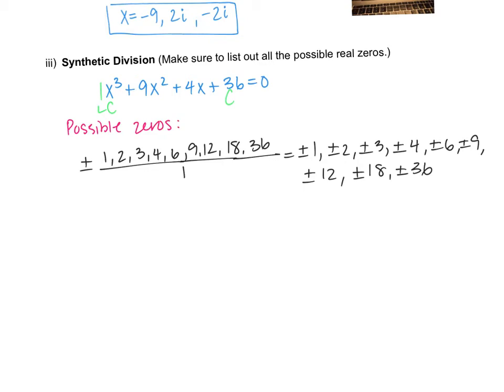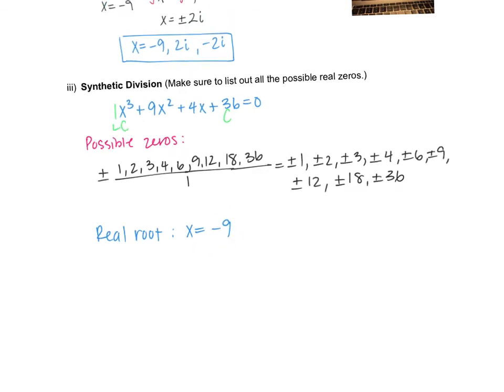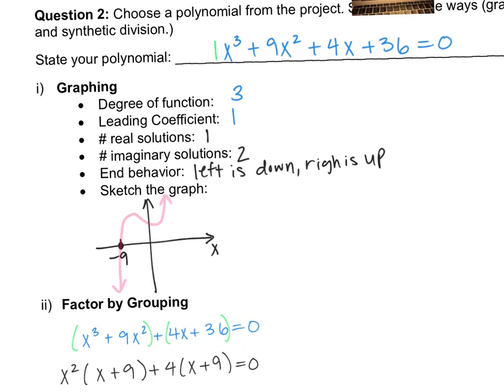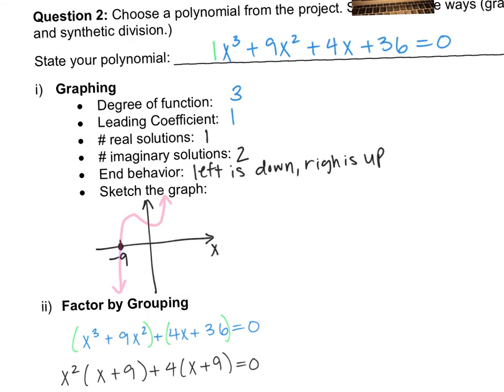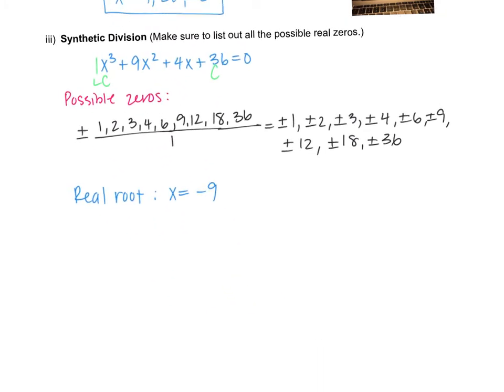And then the next thing you want to do is use synthetic division. So because we already checked the graph, the real root that we found was x equals negative 9. So that one actually crossed the x-axis. So you're going to use your graphing to help you out with synthetic division. So we found x equals negative 9. And our list confirms it. Our possible list confirms that negative 9 is possible to get. And then we're going to start making our box. So negative 9 goes in. I'm going to label constant and then put my numbers underneath. So I have a 1, a 9, a 4, and a 36. I'm going to pull down the first number.